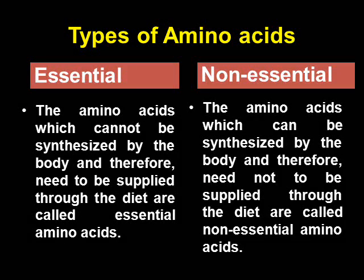The amino acids which cannot be synthesized by the body, and therefore need to be supplied through the diet, are called essential amino acids. They are required for proper growth and maintenance of the individual. Opposite to that, the amino acids which can be synthesized by the body, and therefore need not to be supplied through the diet, are called non-essential amino acids.